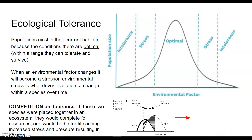When environmental factors change, it becomes a stress, and environmental stress is what actually drives evolution or change in species over time. Organisms don't typically exist isolated from other organisms — and we don't want them to — because the greater the biodiversity, the greater the resilience.